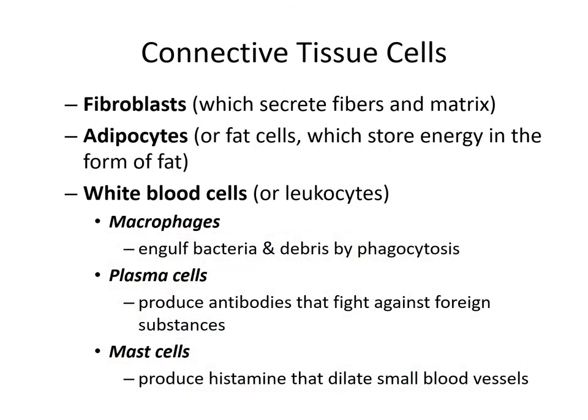Fibroblasts secrete the proteinaceous fibers and also the proteoglycans and glycoproteins. Adipocytes store energy in the form of fat — triglycerides predominantly. White blood cells leak out of capillaries and wander around in connective tissue. Macrophages engulf bacteria and debris. Plasma cells produce antibodies that bind to foreign substances and hopefully deactivate them — for instance, antibodies might bind to proteins on the surface of a bacterium that it would use to attach to and enter one of your cells.